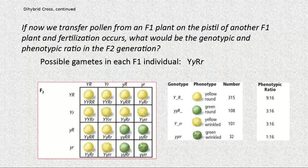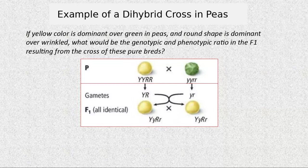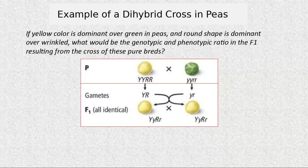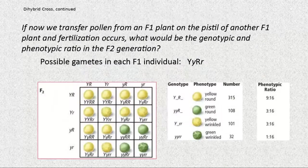Let's talk about the gametes. The possible gametes from the dihybrid F1 are: big Y big R, big Y small r, small y big R, and small y small r. We place them along the top and side of the Punnett square, then cross them.